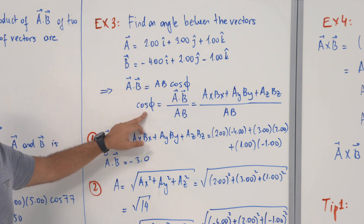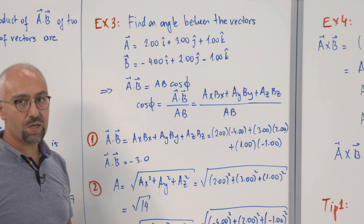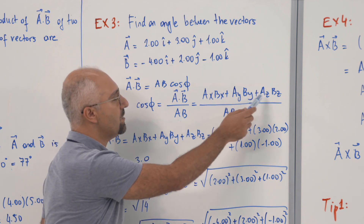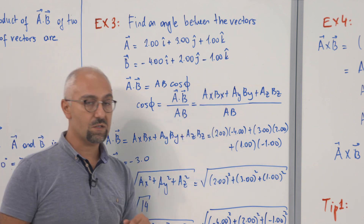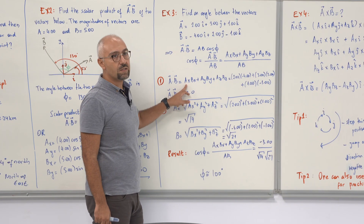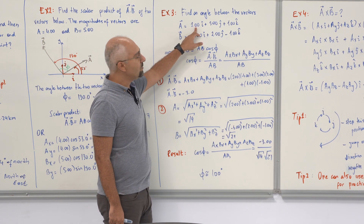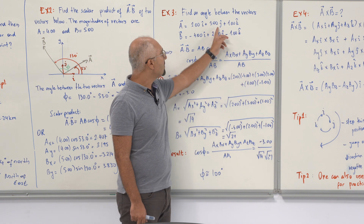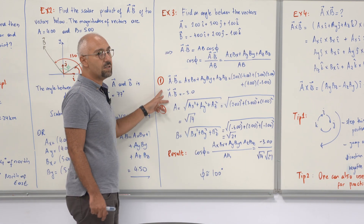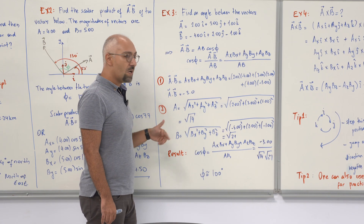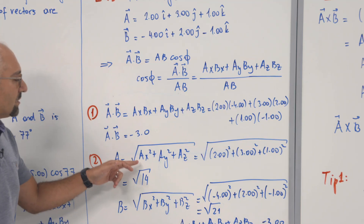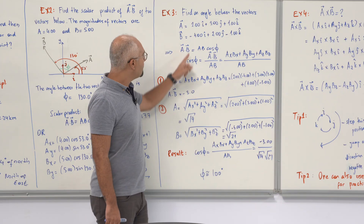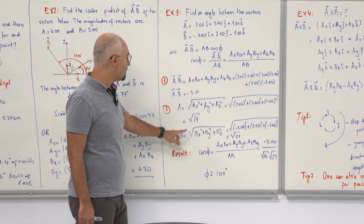Writing explicitly: cosine(phi) = (Ax·Bx + Ay·By + Az·Bz) divided by |A|·|B|, since all unit vectors cancel to give a scalar quantity. The magnitude of A is the square root of Ax² + Ay² + Az², giving the square root of 14. Similarly, the magnitude of B gives the square root of 21. The result is cosine(phi) = -3 divided by (√14 × √21).